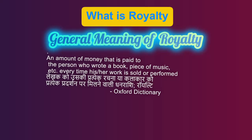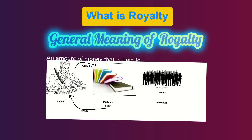पहला तथ्य creator या author से संबंधित है। दूसरा तथ्य creator या author का बाजार में जो व्यक्ति publish करता है और उस पर लाभ कमाता है। तीसरा पक्ष खरीददार का है। पहले व्यक्ति की कृति को दूसरा व्यक्ति product के रूप में बाजार में उपस्थित विभिन्न तीसरे प्रकार के व्यक्ति को बेचकर लाभ अर्जित करता है। दूसरा व्यक्ति जो लाभ अर्जित करता है उस धनराशि का तैदर के अनुसार एक अंश author या creator को भुगतान करता है — यह अंश जो भुगतान किया गया है, यह रॉयल्टी है।